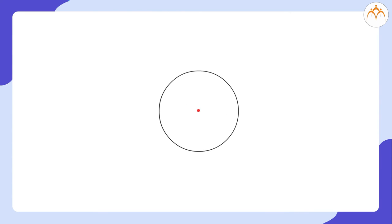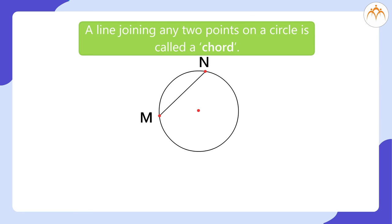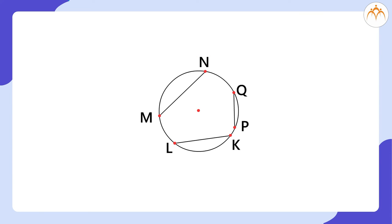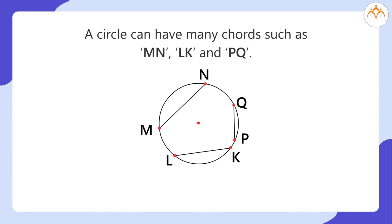Chord. Now, draw any two points on the circle. Also, join these two points with a straight line with a ruler. Name them M and N. A line joining any two points on a circle is called a chord. Which is a chord in this figure? The chord is line MN. Draw two more chords of the circle. A circle can have many chords such as MN, LK and PQ.